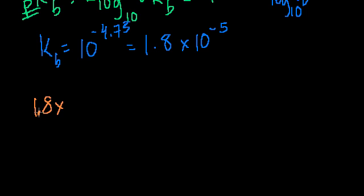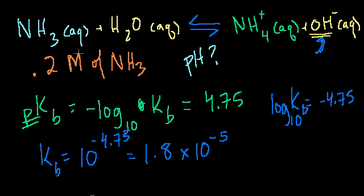1.8 times 10 to the minus 5 will be equal to. In the denominator, we have our concentration of reactants. Remember, you don't include the solvent. So you only include the NH3.